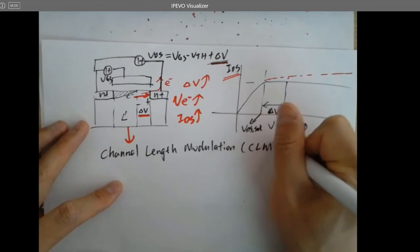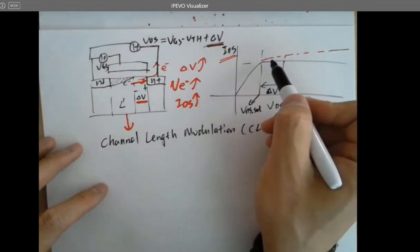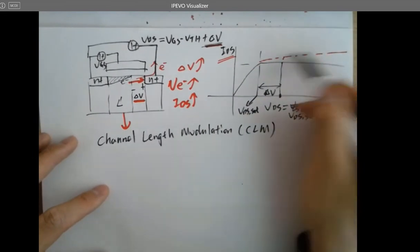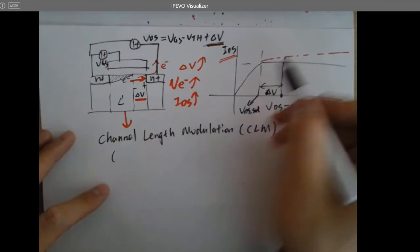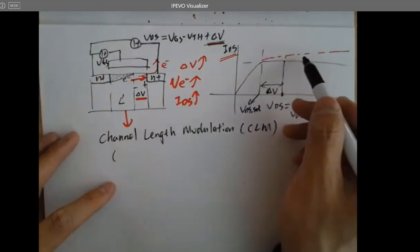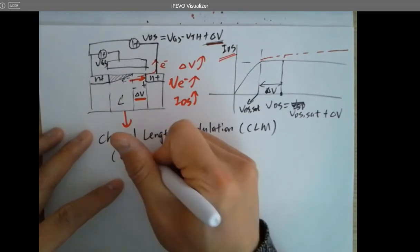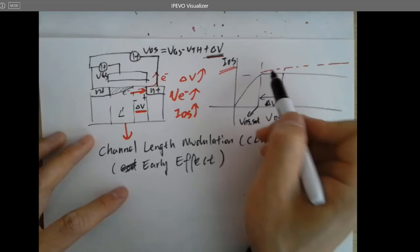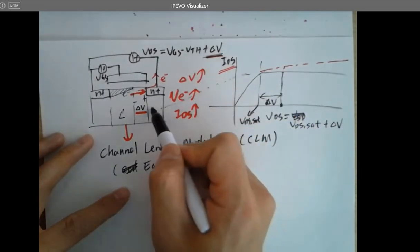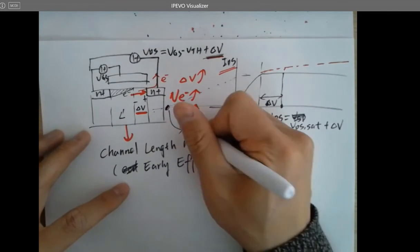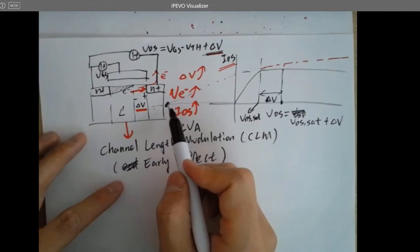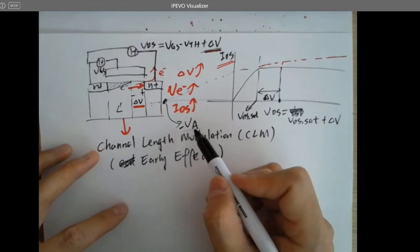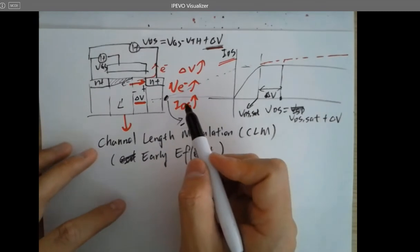Channel length modulation is similar in behavior to the BJT transistors we'll cover in the following days. The BJT has a similar effect called the Early effect. So we use the same name here. If you extend the saturation curve back to the x-axis, there's an intersection — that voltage is called VA, or minus VA. Why is it called Early effect? Because it's the last name of the person who discovered it.